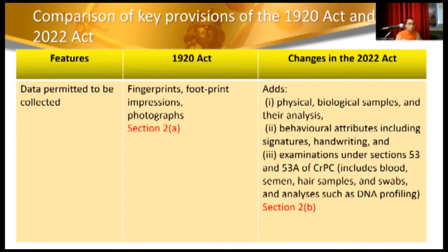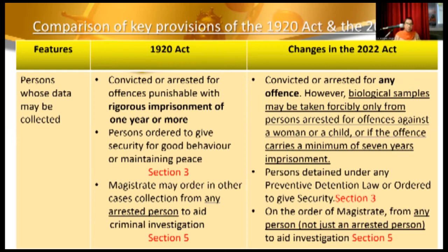The new act increased the types of data collected. Earlier it was just fingerprints, footprints, and photographs, but with this act, physical and biological samples can also be taken, as well as behavioral samples like signatures and handwriting. Similar to Sections 53 and 53A of CrPC, biological samples can be taken from convicted and arrested persons.